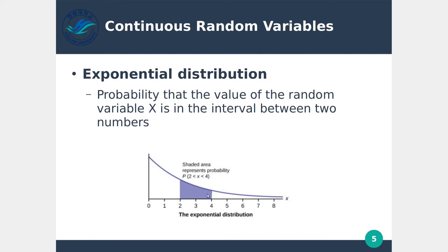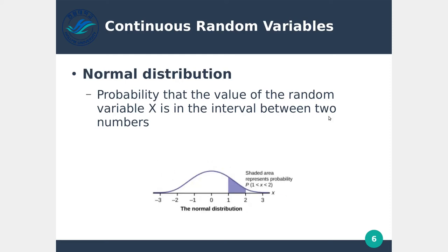Within this area we can see that 4 has a lower probability of happening than 2 — 2 has a much greater probability. But what we're really interested in is anywhere in this area: what is the probability that x will land within that area? The probability that the value of the random variable x is in the interval between two numbers — in this case, 2 and 4 — corresponds to the shaded area.